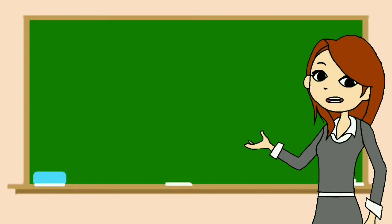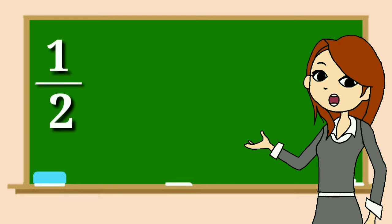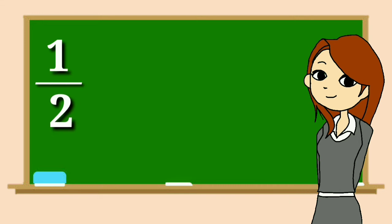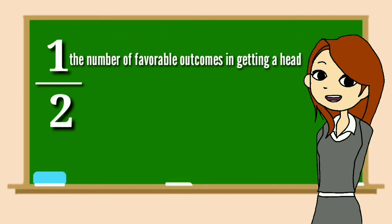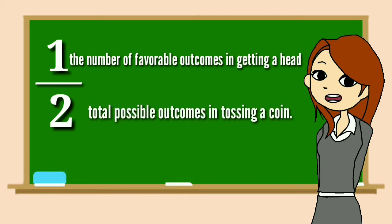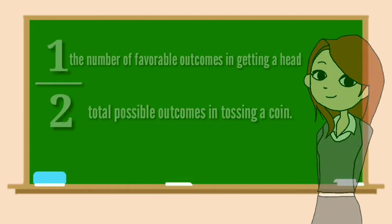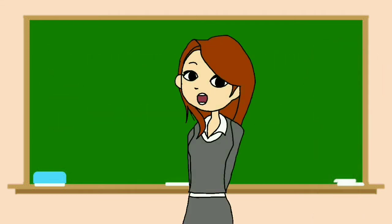But class, why one half? What is the one, and what is the two? One is the number of favorable outcomes in getting a head, and two is the total possible outcomes in tossing a coin. Did you get it?